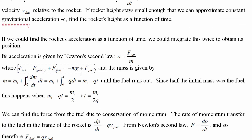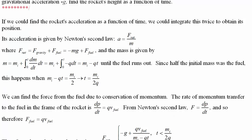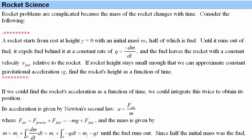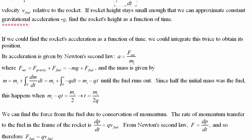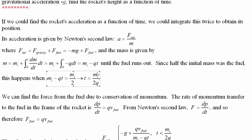We solve for mass as a function of time: it's the initial mass minus the flow rate times time. Since the flow rate is constant, integrating just multiplies by time. In this case, half the initial mass is fuel, so we solve for the time when fuel runs out: t = (m_i / 2) / q. Flow rate has units of mass per time, so dividing mass by flow rate gives units of time.